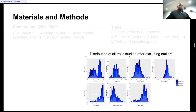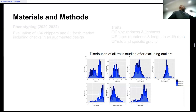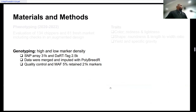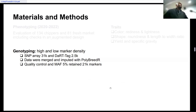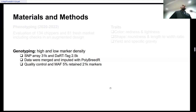For our genotypes, this is the distribution of all the traits we looked at. We removed outliers — those more than two standard deviations from the mean. For genotyping, we used two sets of markers: one high-density and one low-density. We used polyploid tools to carry out the imputation and dosage estimation of these datasets. After quality control and removing markers with minor allele frequency below 5%, we were able to get 21,000 markers for downstream analysis.